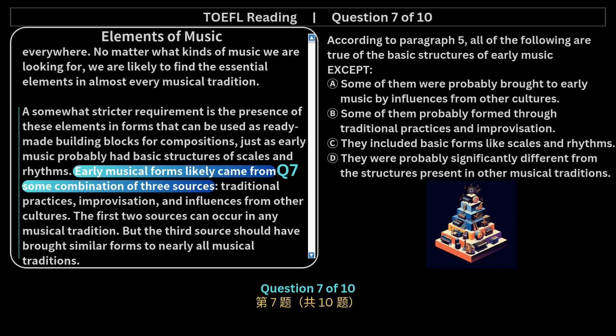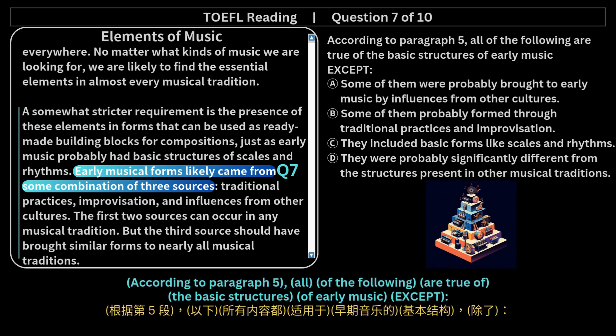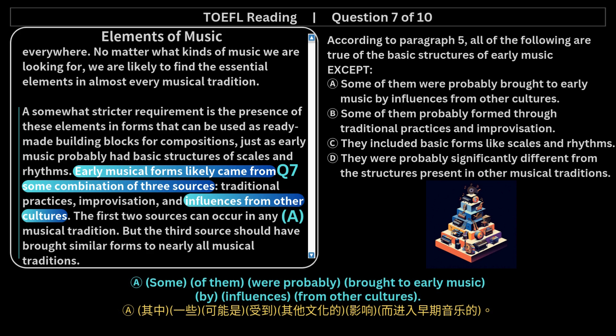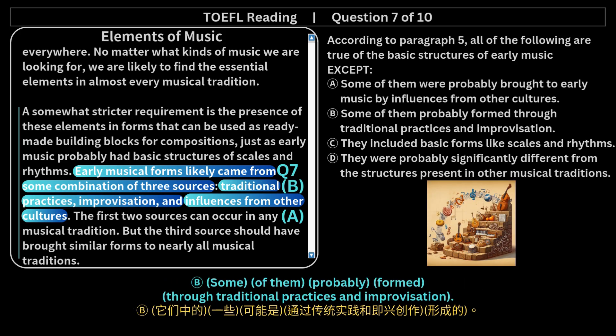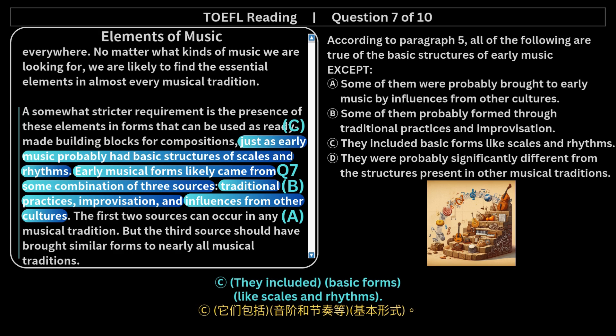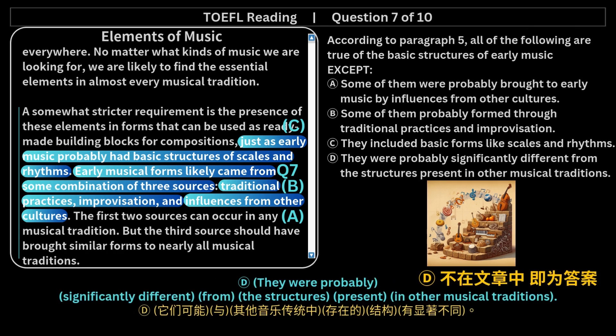Question 7 of 10. According to paragraph 5, all of the following are true of the basic structures of early music EXCEPT: a. Some of them were probably brought to early music by influences from other cultures. b. Some of them probably formed through traditional practices and improvisation. c. They included basic forms like scales and rhythms. d. They were probably significantly different from the structures present in other musical traditions.